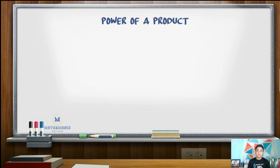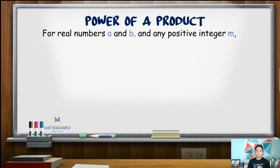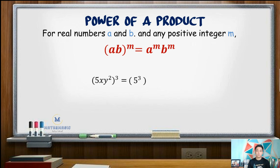Next, power of a product. This law states that for any real numbers a and b and any positive integer m, the quantity ab raised to m is the same as a raised to m times b raised to m. For example, the quantity 5xy squared, cubed: distribute the outer exponent 3 to every component. We get 5 cubed times x cubed times the quantity y squared cubed. Evaluating: 5 cubed is 125x cubed, and the cube of y squared is y raised to 6. Final answer: 125x cubed y to the 6th.